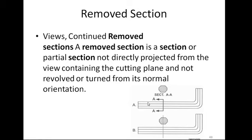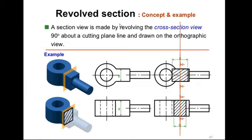As the same example we have seen in revolved section — this is a hexagonal bar, and you want to see how it looks from inside. Whenever we take a front view, it looks only like a rectangle. So we want to see from inside; for that purpose we are going to take here a sectional view, or we are taking a cutting plane. After cutting this section, you will get this shape. In revolved section, we turn this same view 90 degrees and superimpose it on the same front or top view.